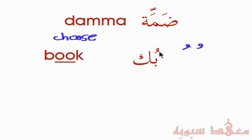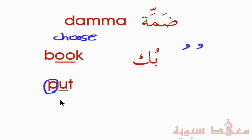We have the Ba' with a Dhamma — 'Bu' — followed by the Kaf, the K sound, giving us 'Buk.' Similarly, the English word 'put' has the same short 'oo' sound. Note that there's no P sound in Classical Arabic — those in Iraq may use it, but in Classical Arabic, the P sound is typically represented by the Ba'.